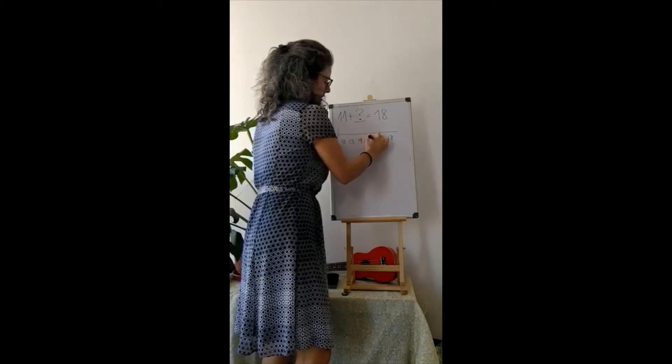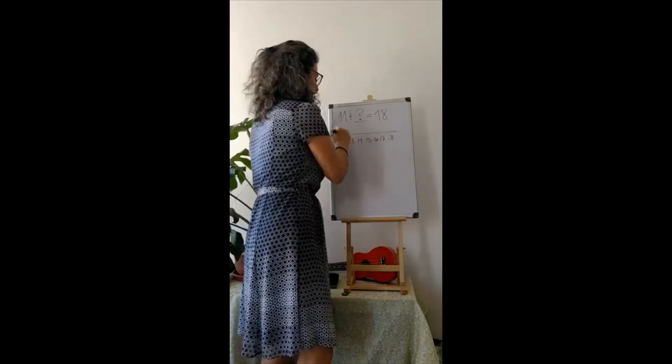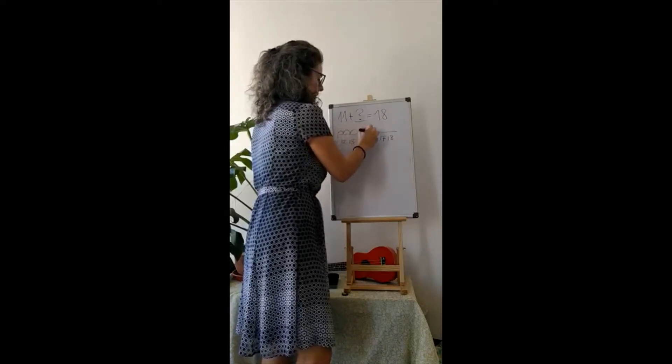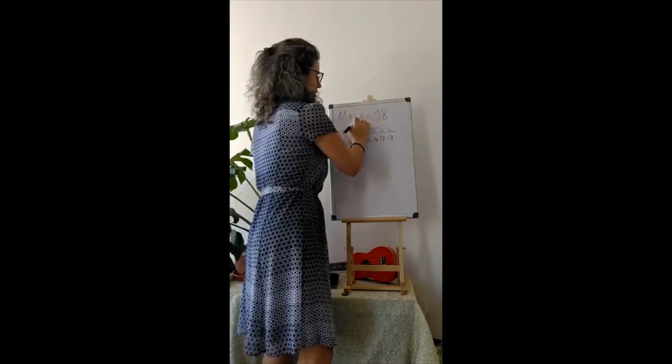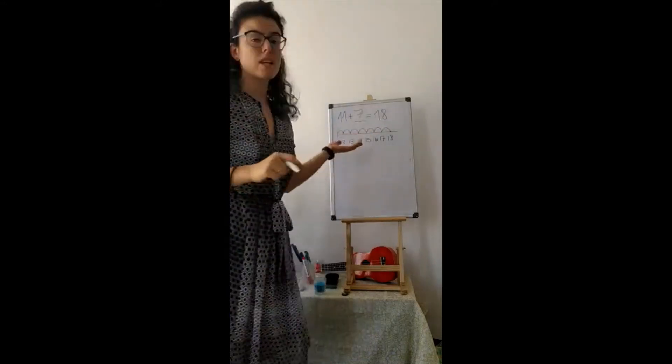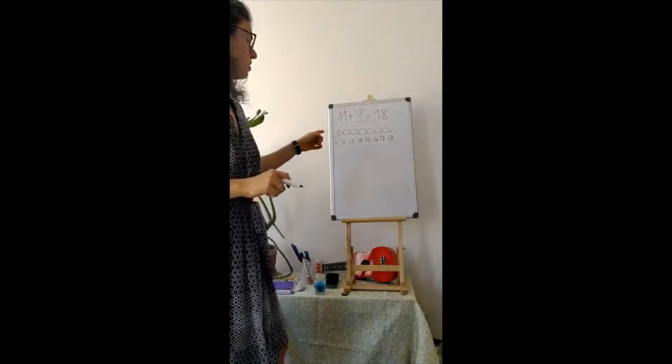Fourteen, fifteen, sixteen, seventeen. And then we count. One, two, three, four, five, six, seven. So we know that this is seven. So that's one way if you use a number line.